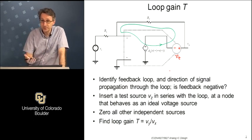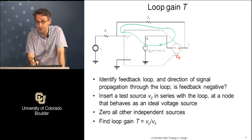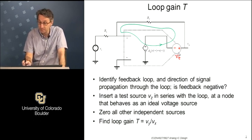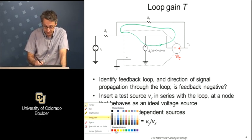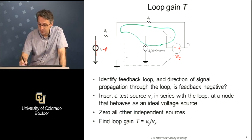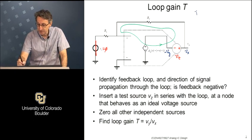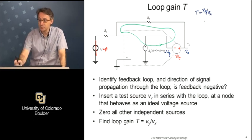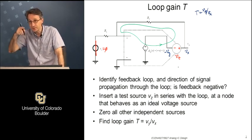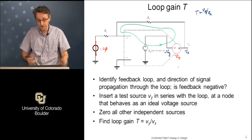The test source should be placed at the node that behaves as an ideal voltage source. In op-amp circuitry there is always such a convenient point because the output of the op-amp is represented by a voltage-controlled voltage source, so that node at the output is always a convenient point for insertion of the test source V_z. Zero all other independent signal sources - in this case that means setting the inputs to zero - and then find the response around the loop. We define that response as T = V_y over V_x.